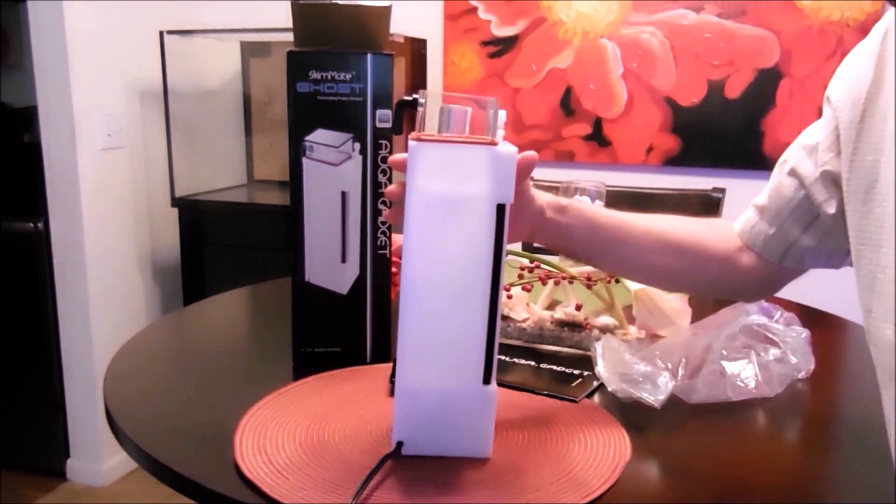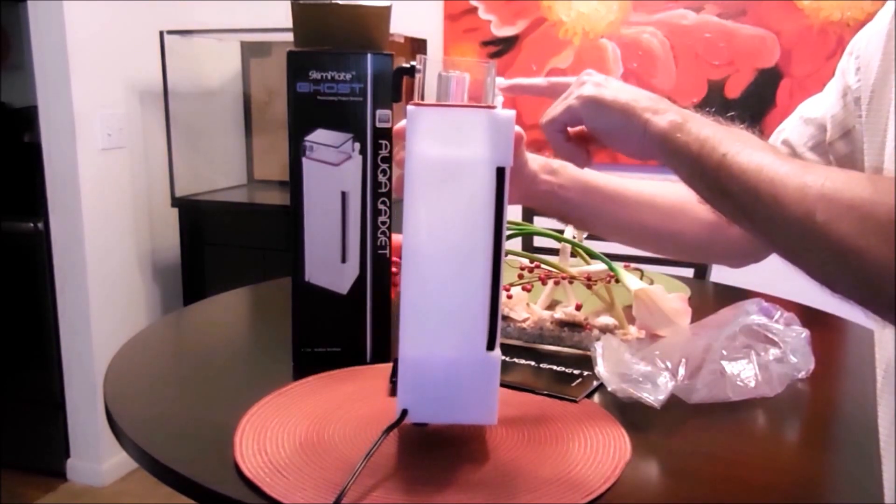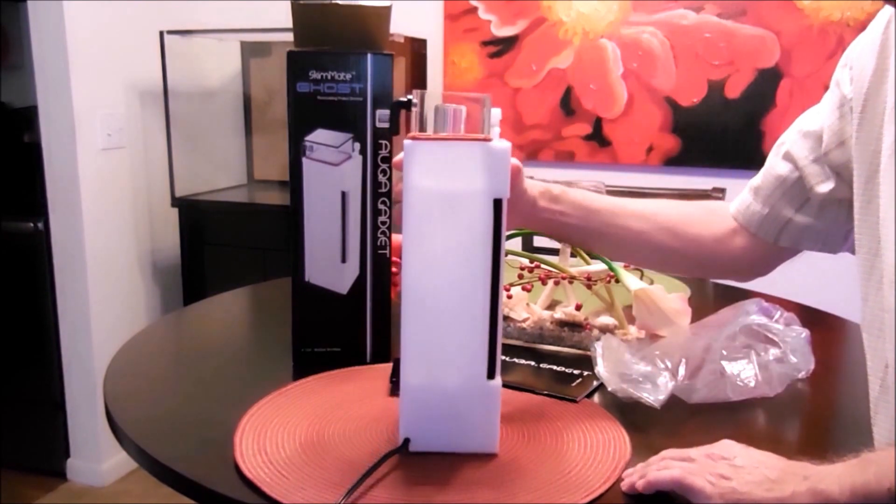Number one, you could either get some egg crate, place it on the bottom. If you raise the skimmer, the water level will go down, so you can adjust it that way.